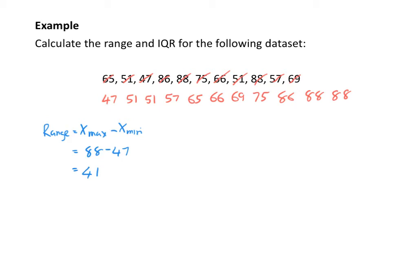Now I want to calculate the interquartile range. To do that, the first thing I need to do is split my data set into 2. To help me split the data set, I want to calculate the median. The median term is going to equal n plus 1 divided by 2, so equals 11 plus 1 divided by 2, which equals my 6th term. Counting to the 6th term, my median is 66.